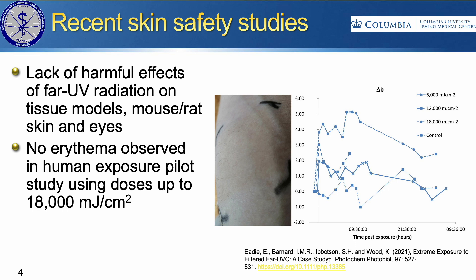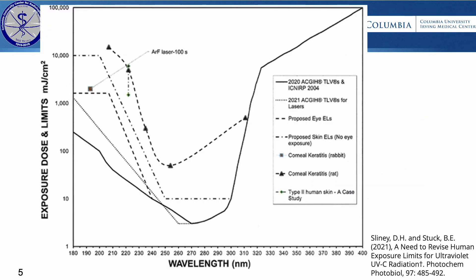We want to get very accurate TLVs with as much data as possible. There have been a few studies that looked specifically at 222 nanometers, and then just a couple of other wavelengths where sources have been widely available, maybe 235. Some of the lasers used for corneal procedures have also been used.